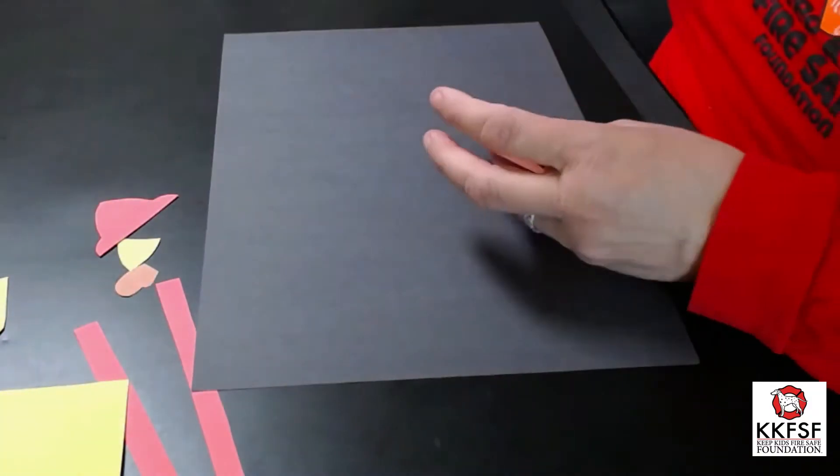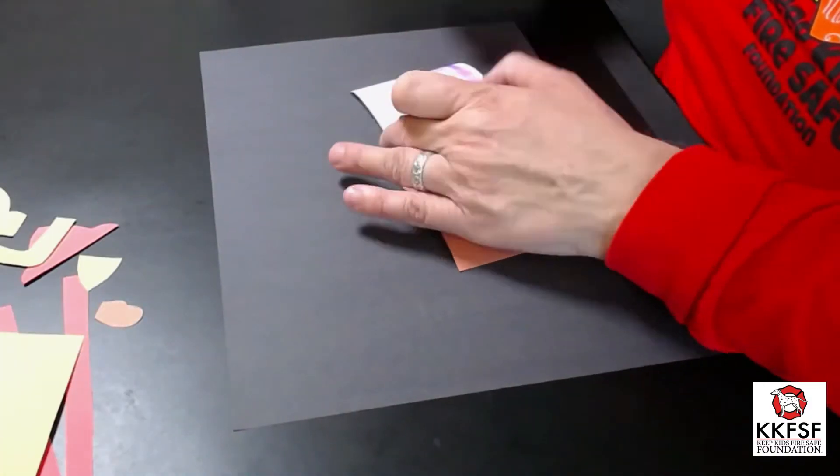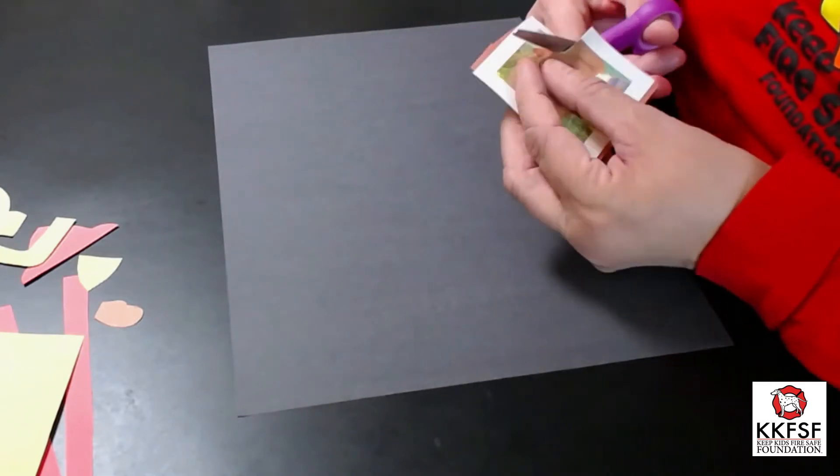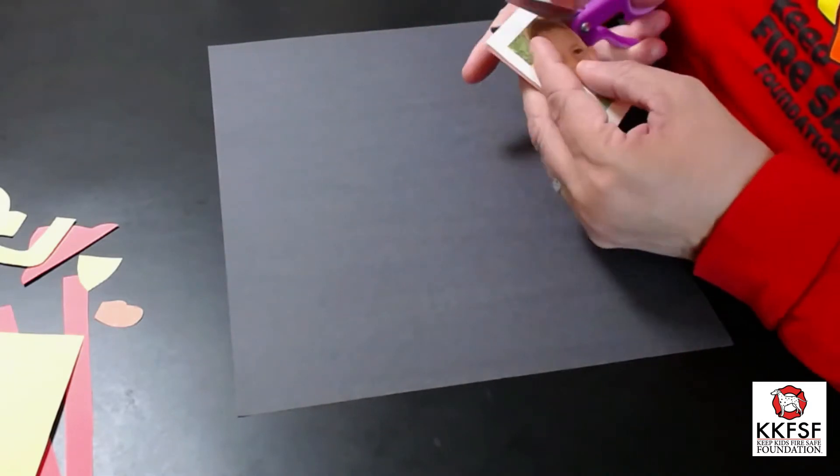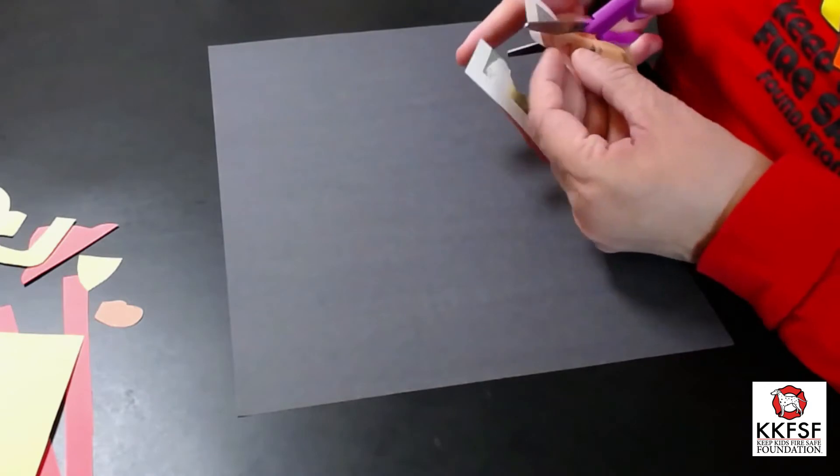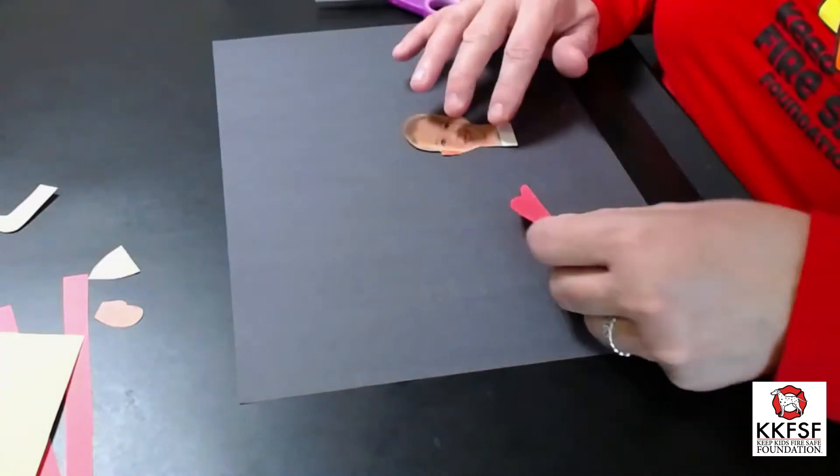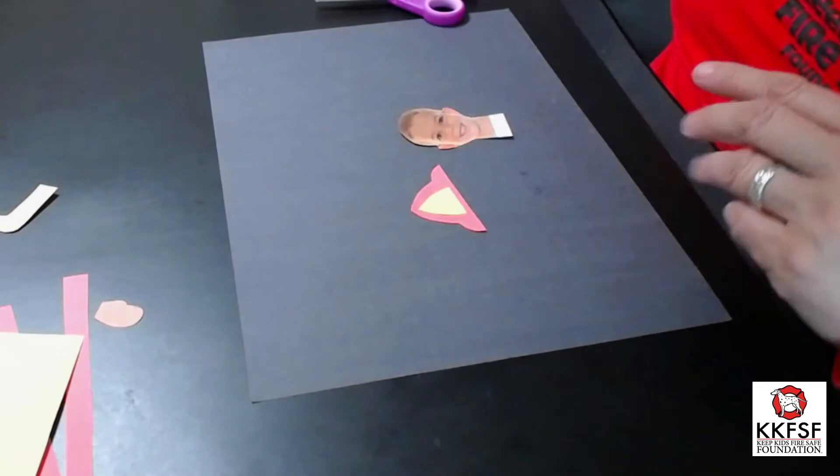Next, take the construction paper and cut out a square. Take your printed photograph and cut out along the outline of your head. Glue on the helmet.